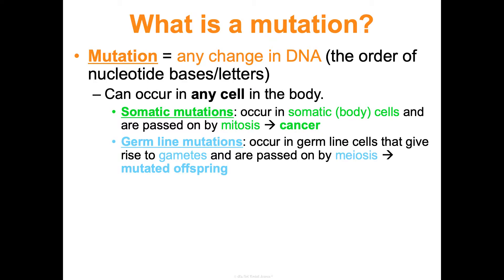Germline mutations occur in germline cells that give rise to gametes. In males, those cells are in the testes and make sperm; in females, they're in the ovaries and make eggs. A germline mutation in one of those cells will give rise to a gamete through meiosis and be passed on to the offspring.